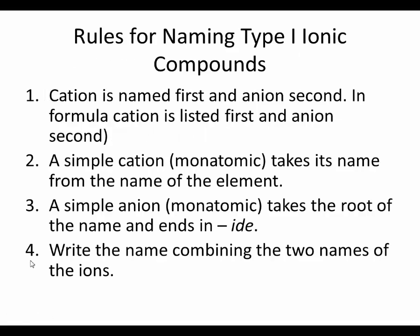The rules for naming: the cation is always first, the anion is always second. A simple cation takes its name from the name of the element. A simple anion takes the root of its name and adds an -IDE ending — so instead of saying oxygen, I would say oxide; instead of fluorine, I'd say fluoride. Monatomic means it's a single element that turns into an ion off the periodic table. You combine the two names of the ions with the cation always first, whether in the formula or the name.